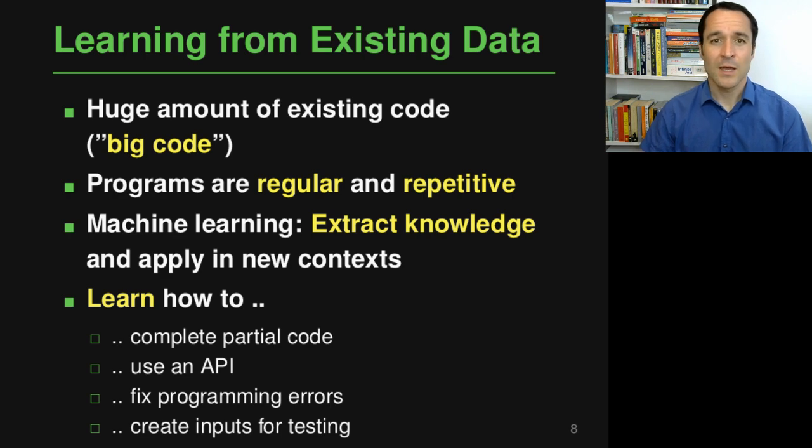By using this idea, learned models on code have been able to for example complete partial code, so they essentially give you a code completion mechanism, or they can tell you how to use an API by learning from existing API usage examples and then telling you as a developer how to use that API. Such approaches can also learn how to find bugs or maybe even fix bugs because they know how incorrect code looks like and they know how to make the code correct, and you can for example also use such learning based approaches to create inputs for testing, where you have an approach that automatically exercises a program by learning how to make best use of the tested program.